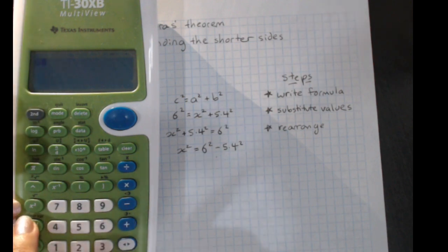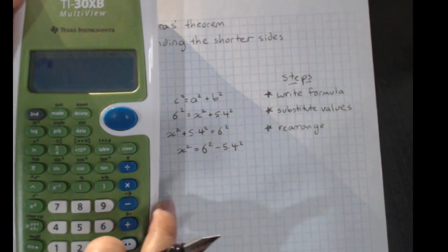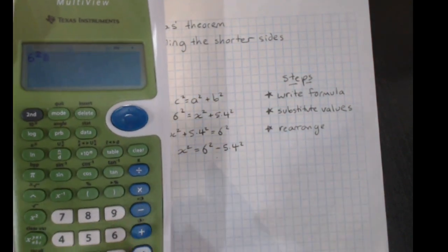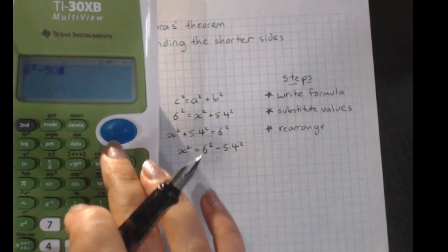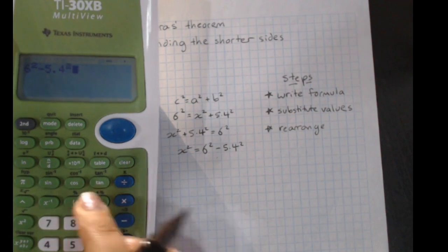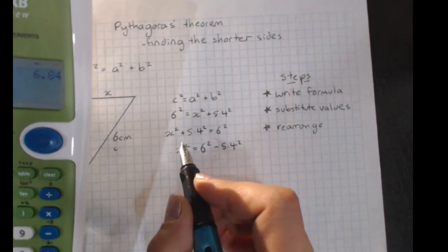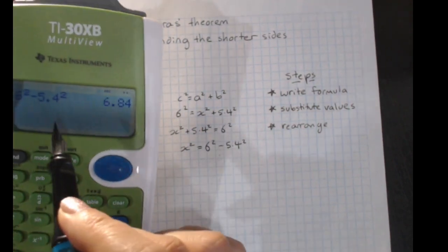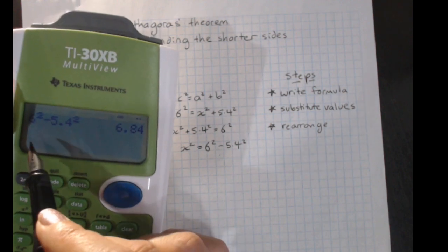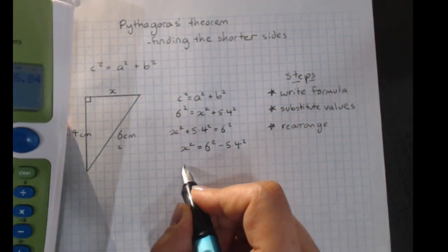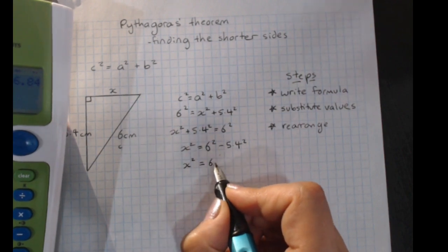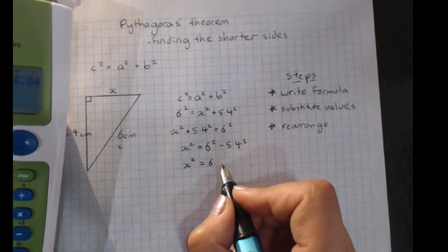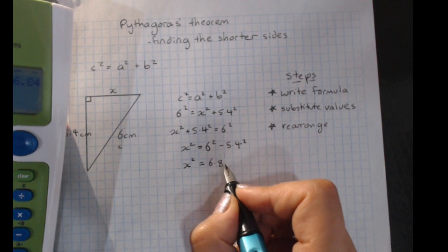6, use the squared key. Sorry, can't see that. There we go. Minus 5.4 squared. So, 6 squared minus 5.4 squared. x squared equals 6.84.